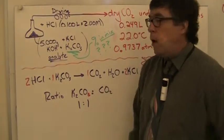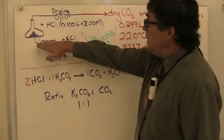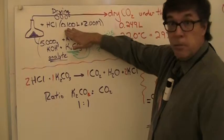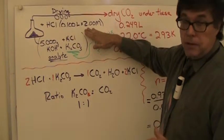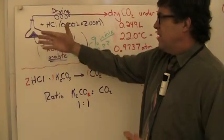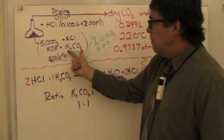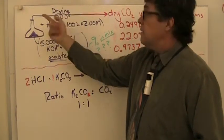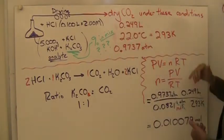We're going to add hydrochloric acid. We're adding a hundred milliliters, or 0.1 liter, of a two mole per liter solution. That's going to react with the potassium carbonate and it's going to bubble out carbon dioxide. We're going to dry that carbon dioxide and collect it.